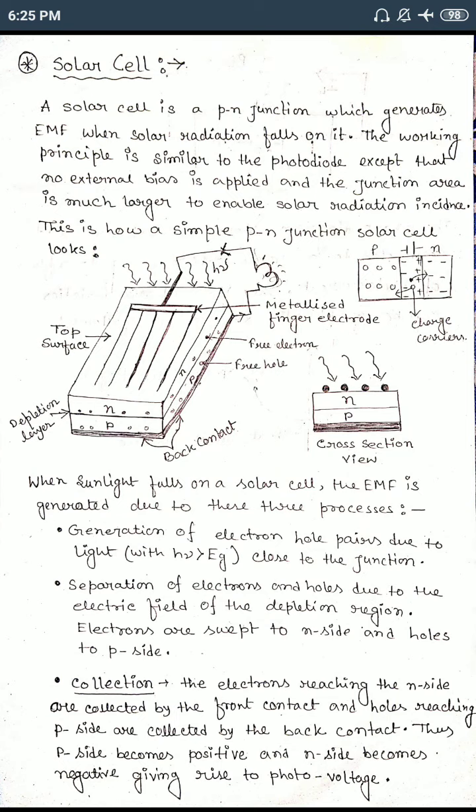Now we discuss how a simple P-N junction solar cell looks and how it will work — that means how that EMF will be generated. In this figure you see the P-N junction: one P-type and one N-type. Two types of semiconductor are there, but keep it in your mind: the N region which is facing towards the sunlight, that region will be made very thin compared to the other one. So the N region is made very thin and the P region will be larger, thicker compared to the N region.